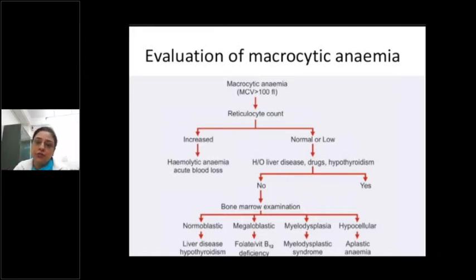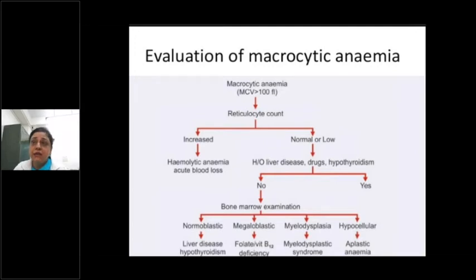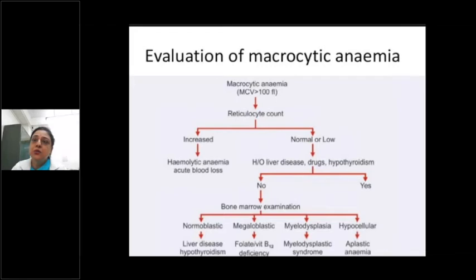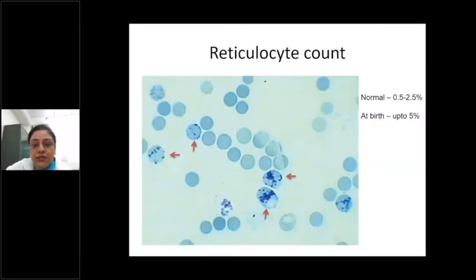Very often in clinical practice, when you get a macrocytic anemia or pancytopenia with macrocytosis, you do a bone marrow examination in a hospital setting. But since it is an invasive procedure, if the patient can afford it or it is available in your hospital, you go for a B12 assay or folic acid. This is also how a reticulocyte looks on supravital staining.